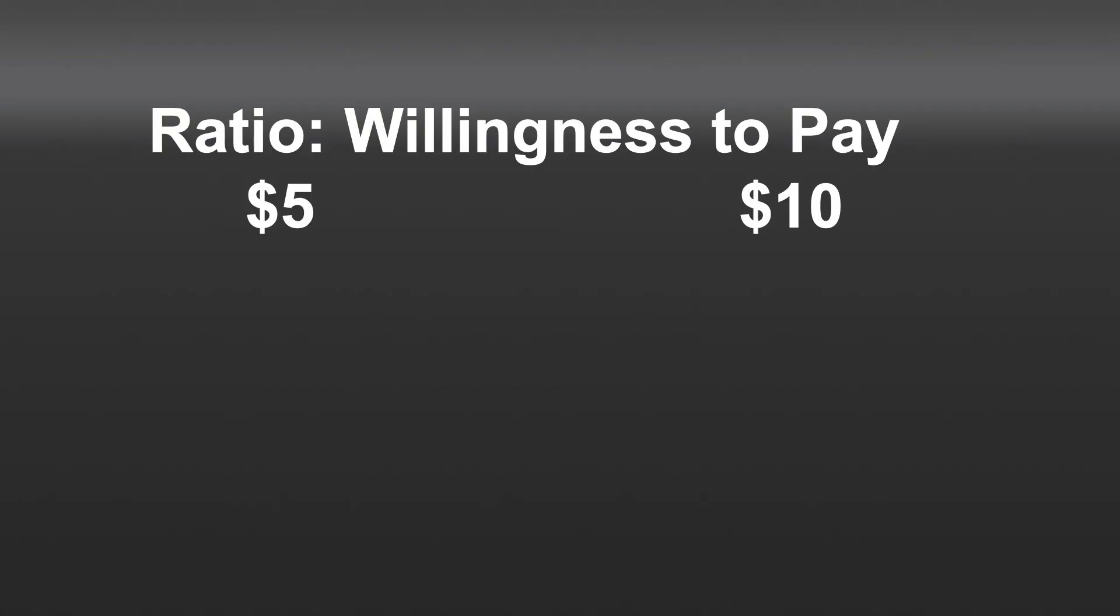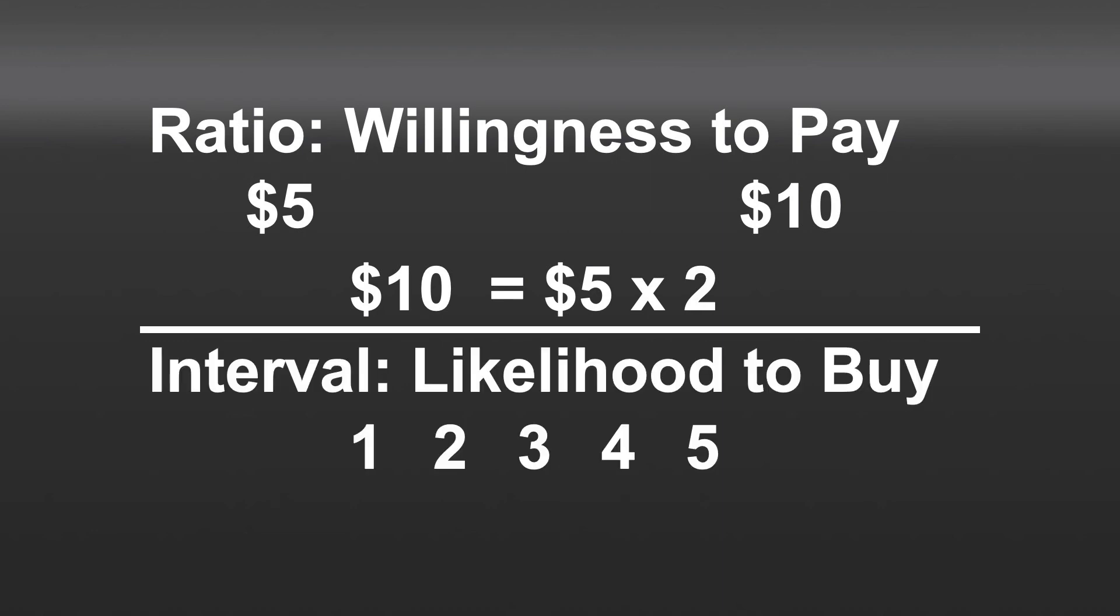So here's a ratio scale, where we ask people willingness to pay, and let's imagine two groups of people, one group says five dollars, and another group says ten dollars. It is the case that ten dollars is five dollars times two. In other words, the group that said ten dollars is willing to pay twice what that first group is willing to say. That might seem trivial, but compare it to an interval scale. Here's my interval likelihood to buy scale, and I'm going to put it on a scale from one to five. If one group of people respond two, and another group of people respond four, it is the case that four is just double two. But that is an incorrect interpretation. We cannot make statements like double, or half, or triple, because there isn't a meaningful zero, and let me show you why.